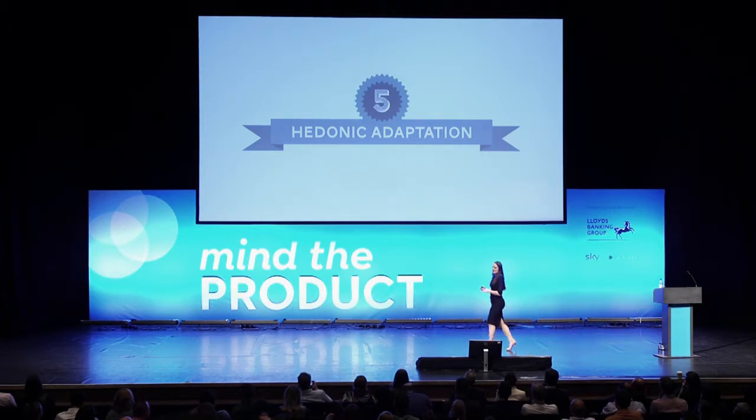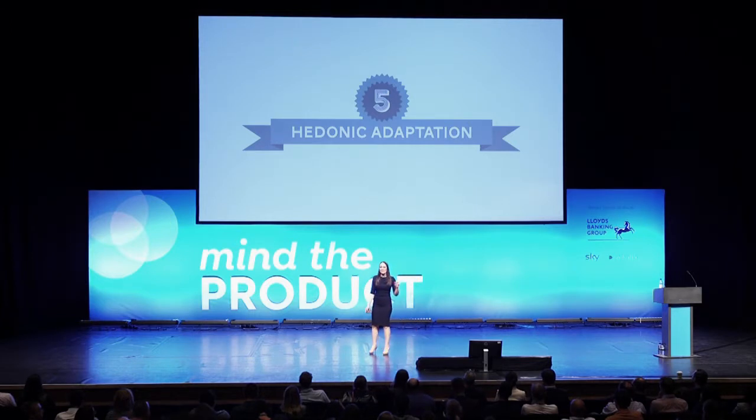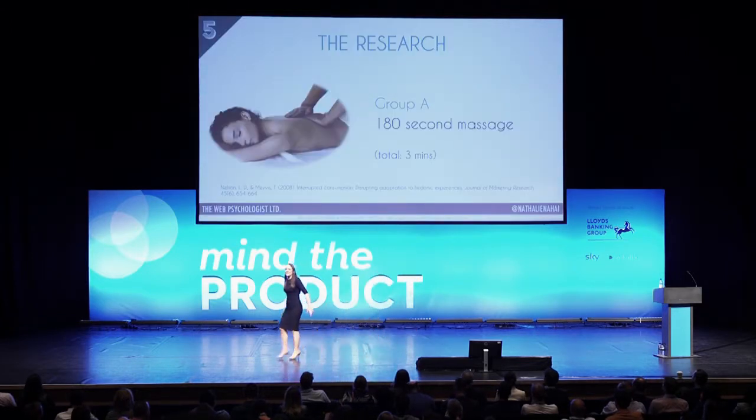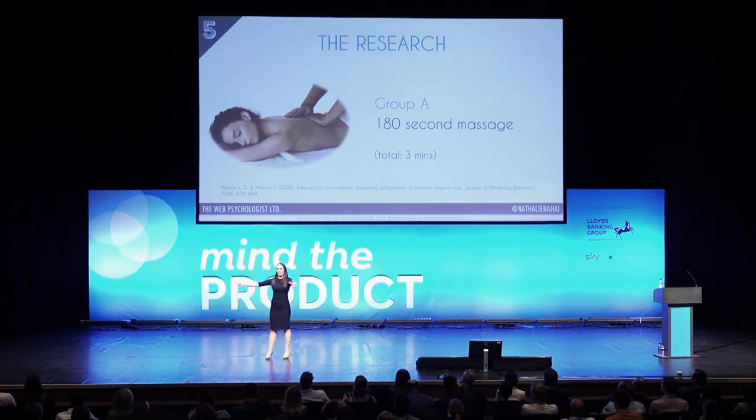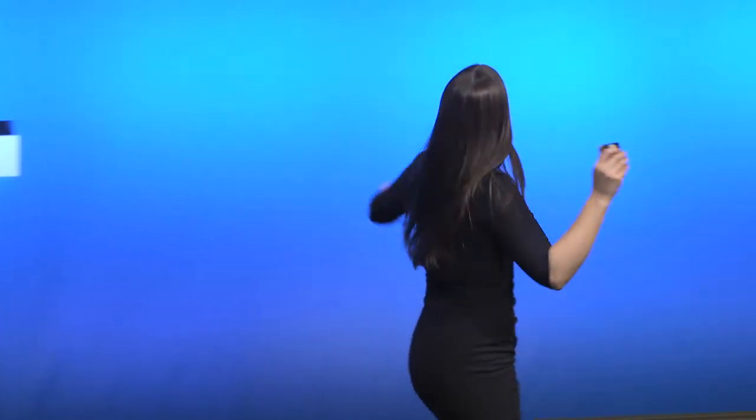The fifth and final principle — my favorite — is hedonic adaptation. Group A gets 180 seconds of massage. Group B gets a little less: 80 seconds of massage, 20 seconds of break, then another 80 seconds — two minutes and 40 seconds in total. Which group will report higher satisfaction and be willing to pay more for that massage?